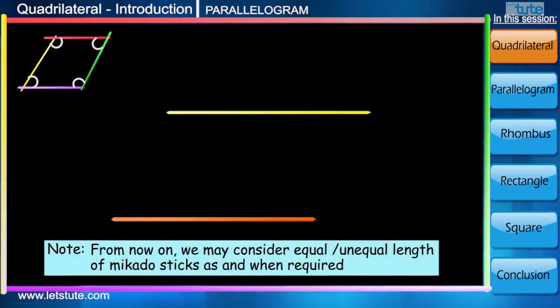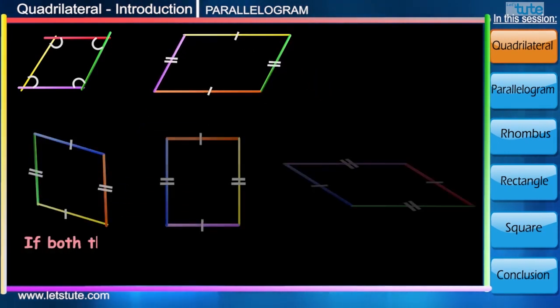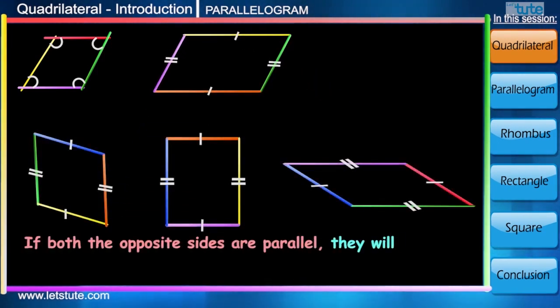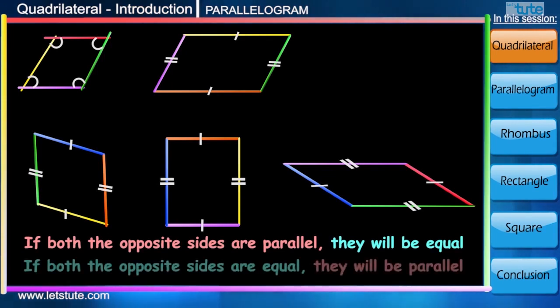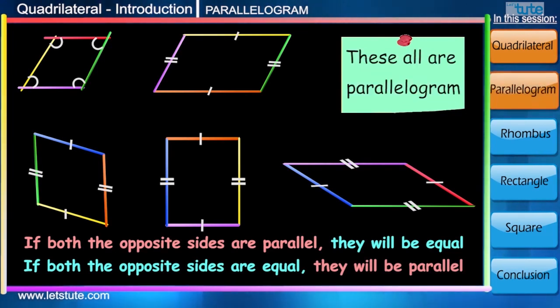Okay, now keep two sticks parallel to each other, and another pair of parallel sticks above this, so that it forms a quadrilateral. If we notice, this quadrilateral will always have two pairs of equal sides. Friends, if opposite sides of a quadrilateral are parallel, then they will be equal. And vice versa - if they are equal, they will be parallel. Our names may not be according to our nature, but in geometry, names always represent their character. Since both the opposite sides are parallel, it has given a name parallelogram.